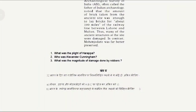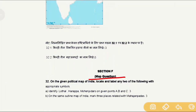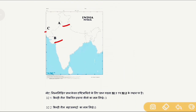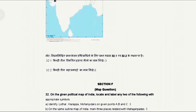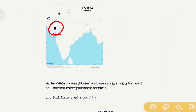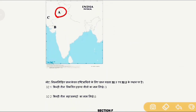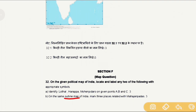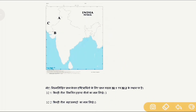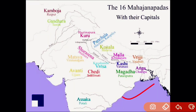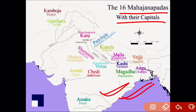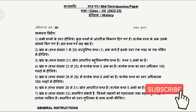Section F is map-based. Students must identify Lothal, Harappa, and Mohenjo-daro on given points A, B, and C. Lothal is in Gujarat (point B), Harappa is in Punjab, Pakistan (point A), and Mohenjo-daro is in Sindh province (point C). The next question asks students to mark three places related to the Mahajanapadas on the same map — any three of the 16 Mahajanapadas with their capitals can be located.